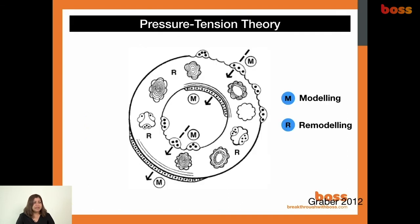If you picture a tooth root in the middle of a donut, as pressure is applied — say from top to lower left — osteoclasts begin to resorb bone. Modeling occurs on the outer surface of the bone, while remodeling occurs on the inner area surrounding the tooth. A combination of modeling and remodeling recruits osteoclasts and osteoblasts. This is how bone bending occurs, bone adapts, and teeth move.